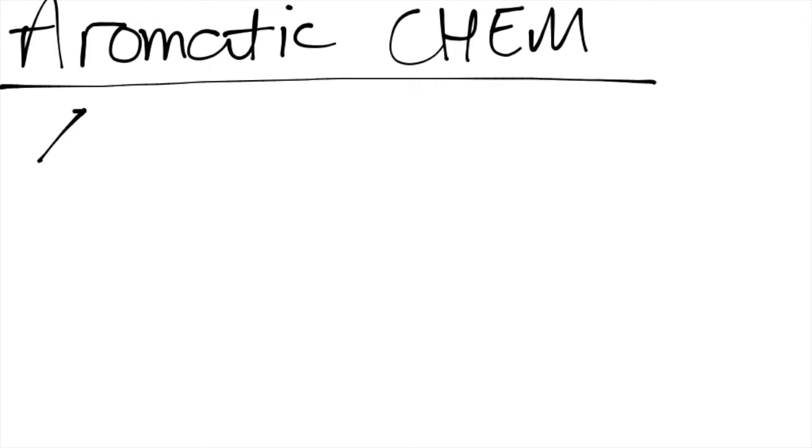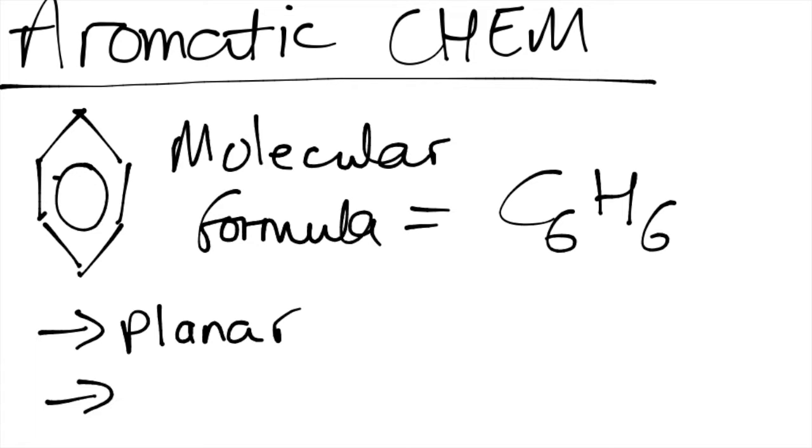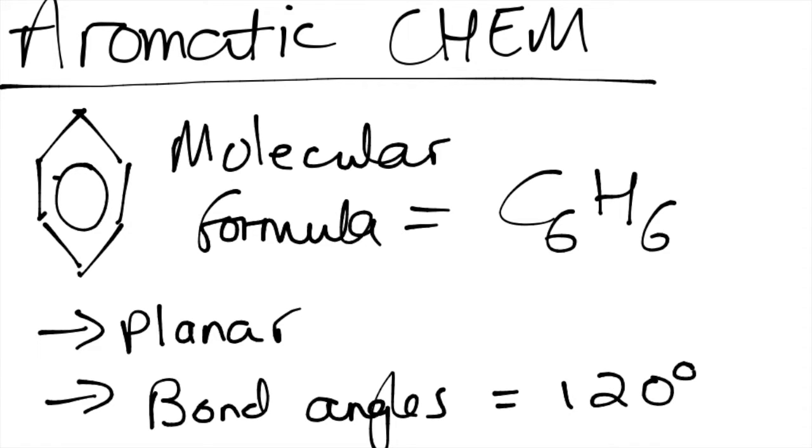This is how you can show benzene. The molecular formula is C6H6. It is planar, so it's in one plane and it has bond angles of 120 degrees. I've just underlined three key bits of information.